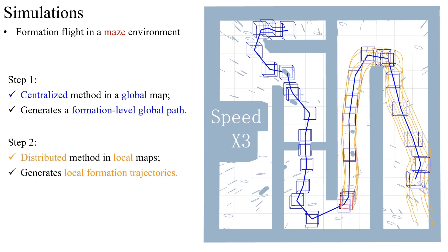After that, eight drones form a cube formation and navigate following the formation-level global path, as shown by the yellow lines here, which is distributed in local maps. This simulation demonstrates that our formation flight system has the ability to fly in a huge wide range of dense environments.